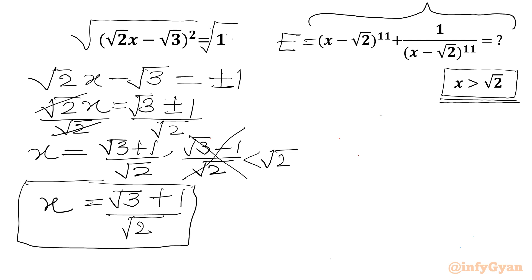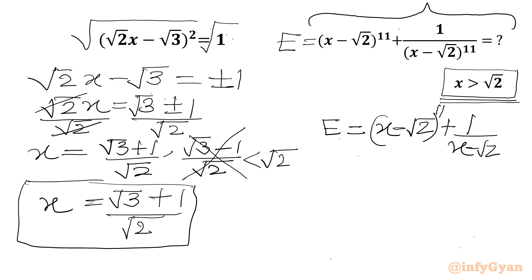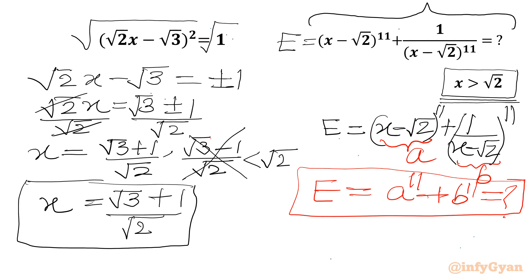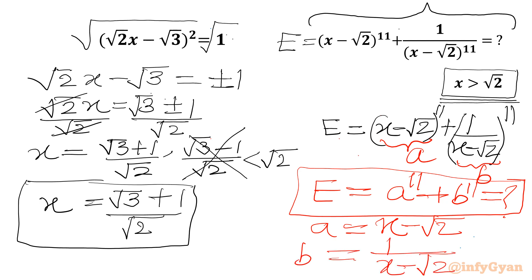Now I will consider our expression E equal to (x minus root 2) to the power 11, plus 1 over (x minus root 2) to the power 11. I will call the first bracket a, and the second bracket b. So we are looking for a to the power 11 plus b to the power 11, where a equals x minus root 2, and b equals 1 over (x minus root 2).